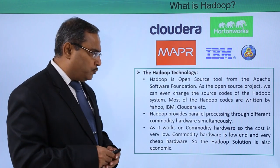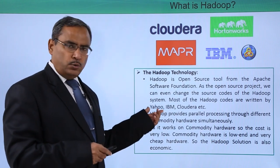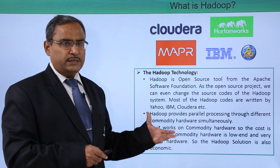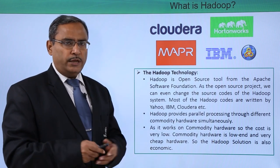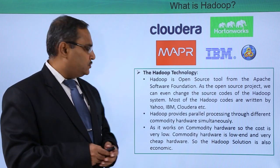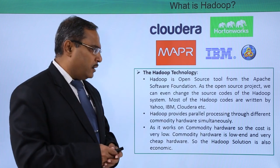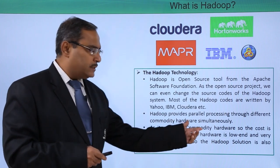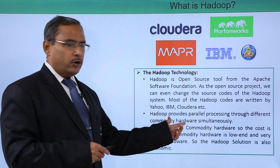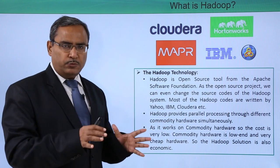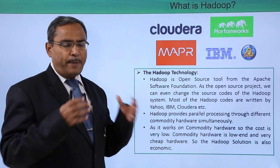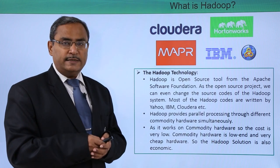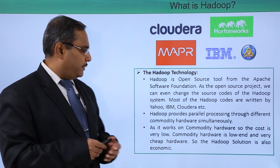Most of the Hadoop code was written by Yahoo, IBM, Cloud Data, and others. These companies have contributed a great deal of code to the Hadoop open source project. Hadoop provides parallel processing through different commodity hardware simultaneously. Commodity hardware means cheap hardware, with the help of which we can achieve parallel processing, so data processing and analysis will be done in a much faster way.